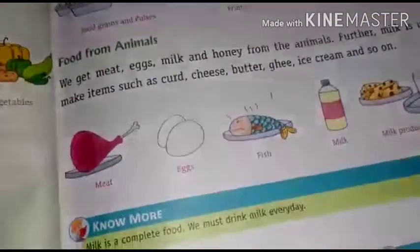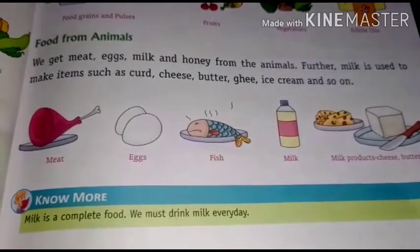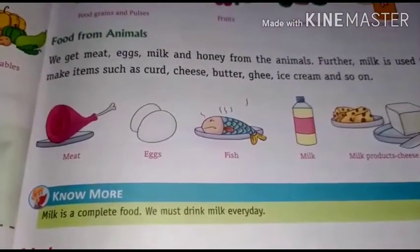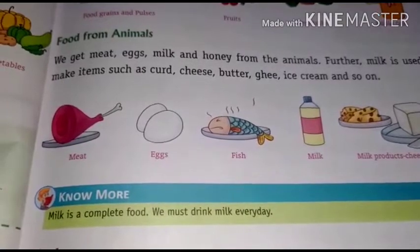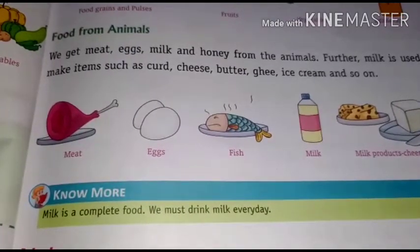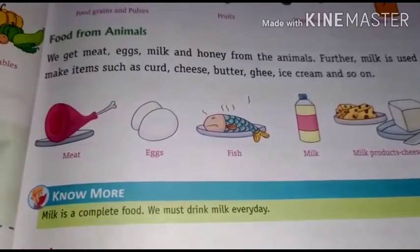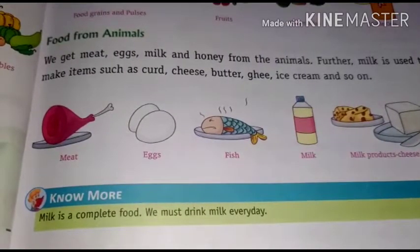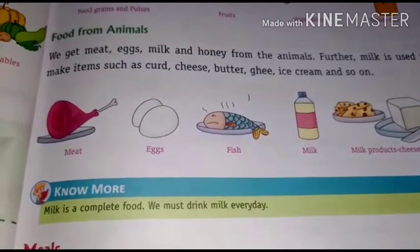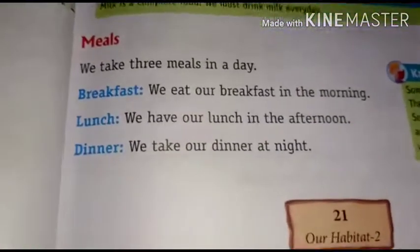Next we have food from animals. We get meat, eggs, milk, and honey from animals. Further, milk is used to make items such as curd, cheese, butter, ghee, ice cream, and so on. So those who are vegetarians get milk and honey from animals, and from milk we can make curd, cheese, butter, ghee, and ice cream.